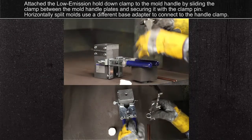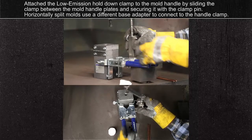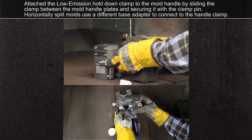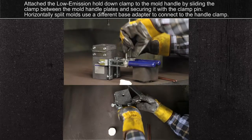Attach the low emission hold down clamp to the mold handle by sliding the clamp between the mold handle plates and securing it with the clamp pin. Horizontally split molds use a different base adapter to connect the handle clamp.